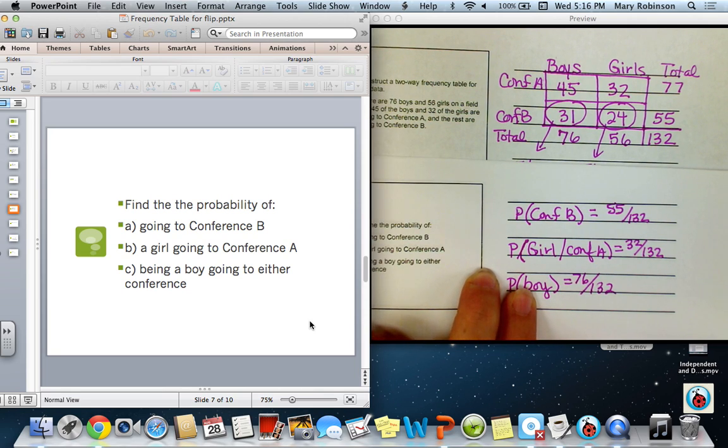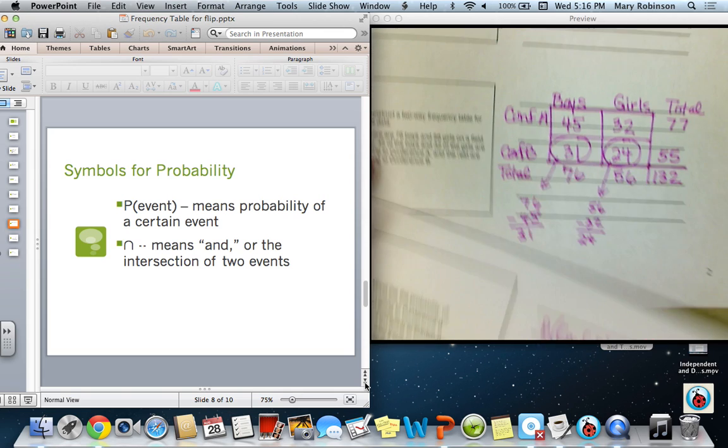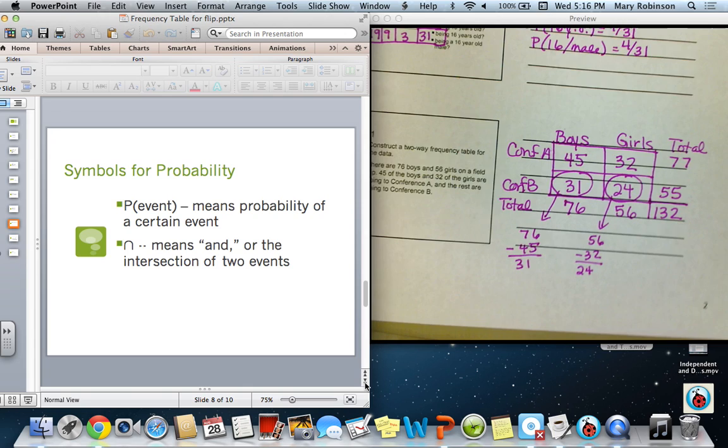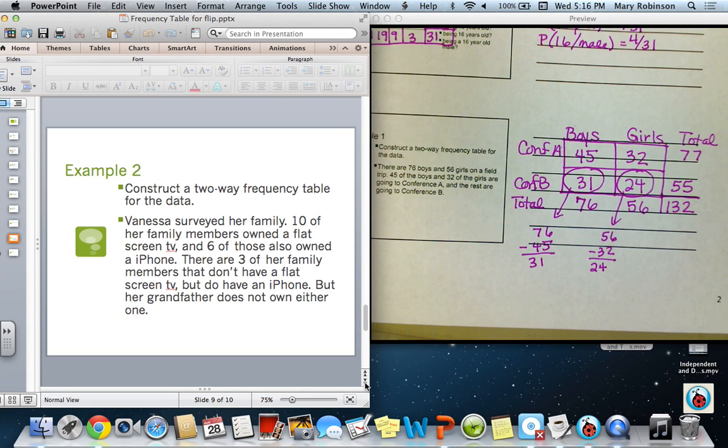It's very important to learn some symbolism with probability. So symbols we use in probability, we've already been using the probability of an event with the probability of the event in parentheses. The other symbol is a symbol that we call intersection, and it means and. So we are looking at the intersection of two events.